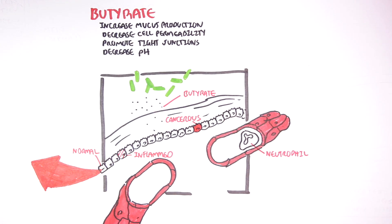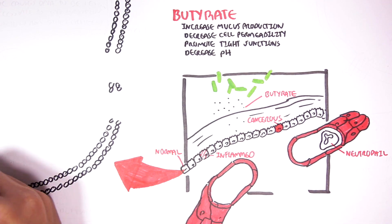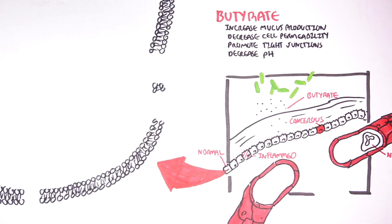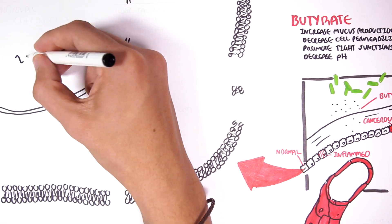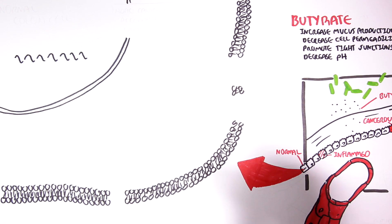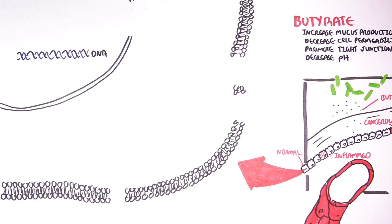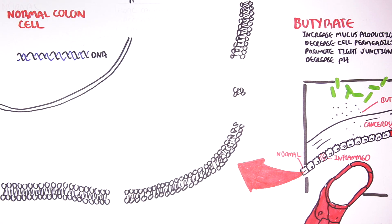Let us begin with the normal colon cell. Here is a colon plasma membrane — the outer membrane — and here is a nucleus which contains the DNA. On the colon cell plasma membrane, as well as on other cell membranes, there are a variety of short-chain fatty acid receptors and transporters.